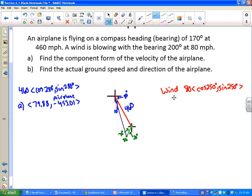Let's figure out what that is. That is negative 27.36, and 80 sine 250 is negative 75.18. This is the component form of the wind vector.